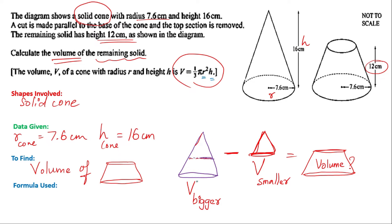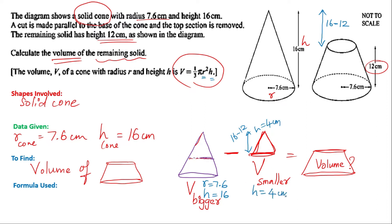For the bigger cone, R is equal to 7.6 and the height is 16. For the smaller cone being subtracted, we know the height of the frustum is 12 centimeters, so the height of the cone being removed will be 16 minus 12, which is 4 centimeters. You have the height of the small cone as 4 centimeters, but the radius is unknown — that's the missing part.